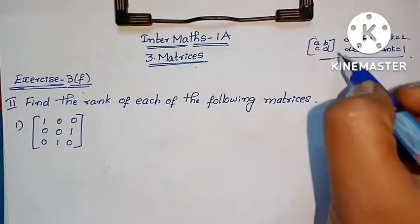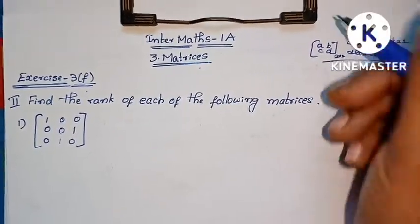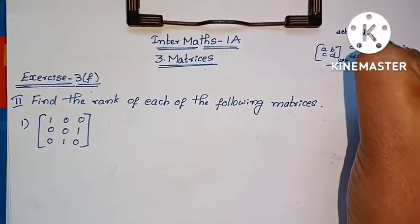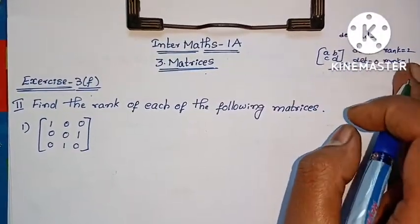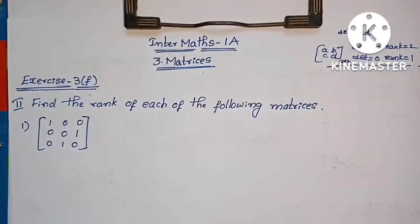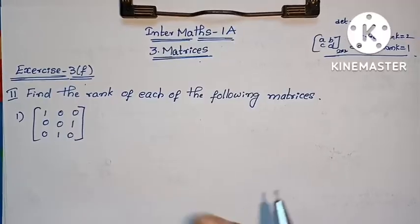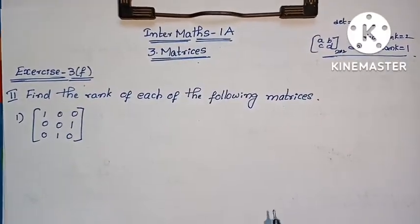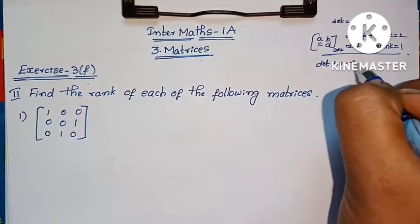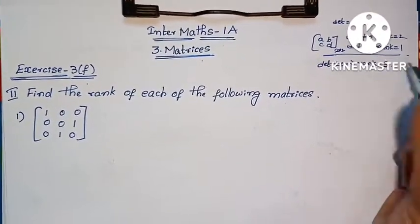As we saw in the last video — if it's a 2x2 matrix and the determinant is not equal to 0, then rank equals 2. If the determinant equals 0, rank equals 1. That we saw last video. That was for a 2x2 matrix. For a 3x3 matrix — if the determinant is not equal to 0, the rank is 3.